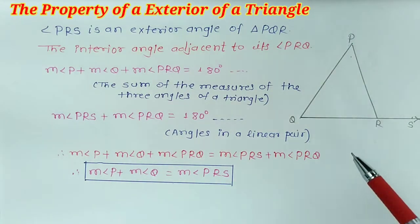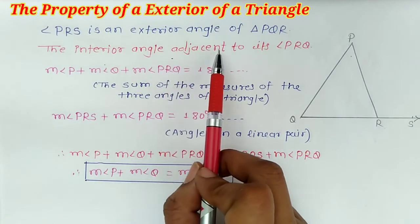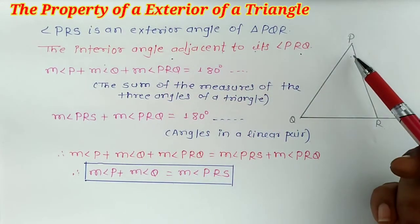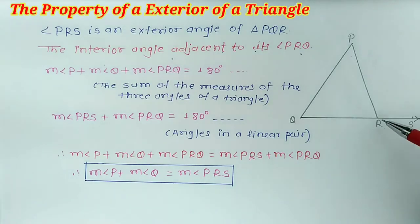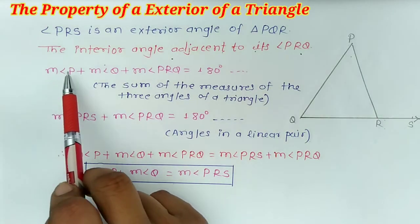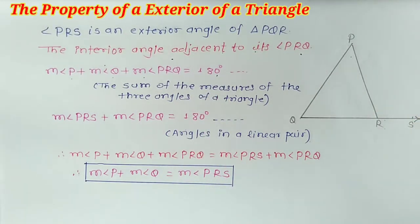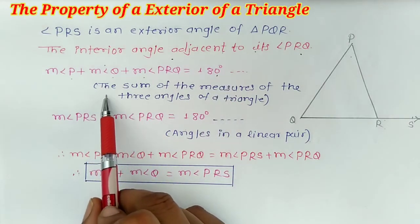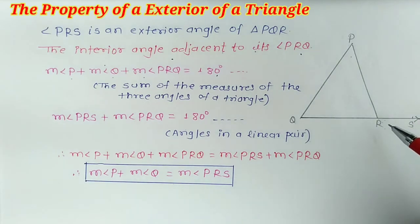Firstly, we write that angle PRS is an exterior angle of triangle PQR. The interior angle adjacent to it is angle PRQ. Then, the measure of angle P plus the measure of angle Q plus the measure of angle PRQ is equal to 180 degrees.